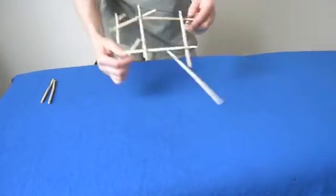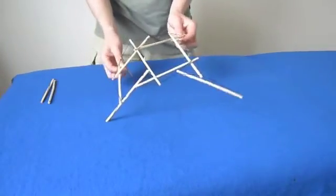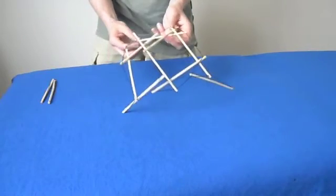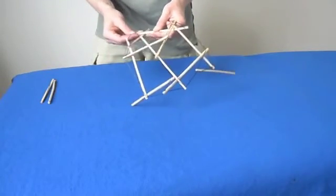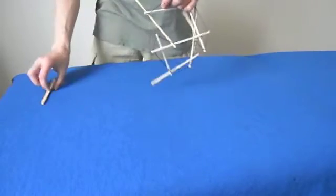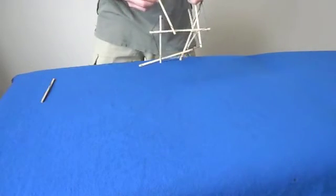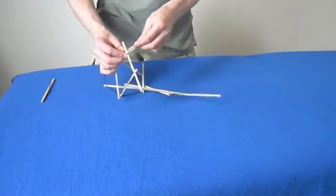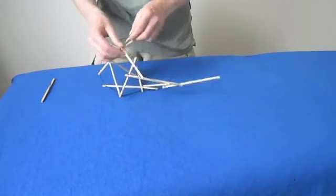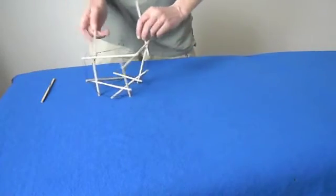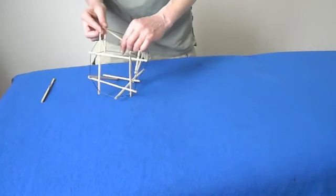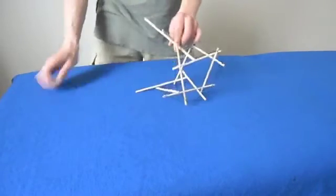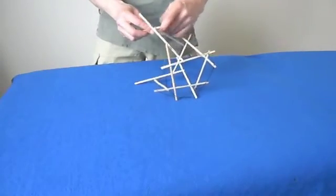As you can see it's already getting much more three-dimensional and we have to bend down some of the sticks. But if we follow the simple rule of knowing how many sticks we have in a corner and that we always have one stick from the left, one stick from the right, it's fairly difficult to get lost.